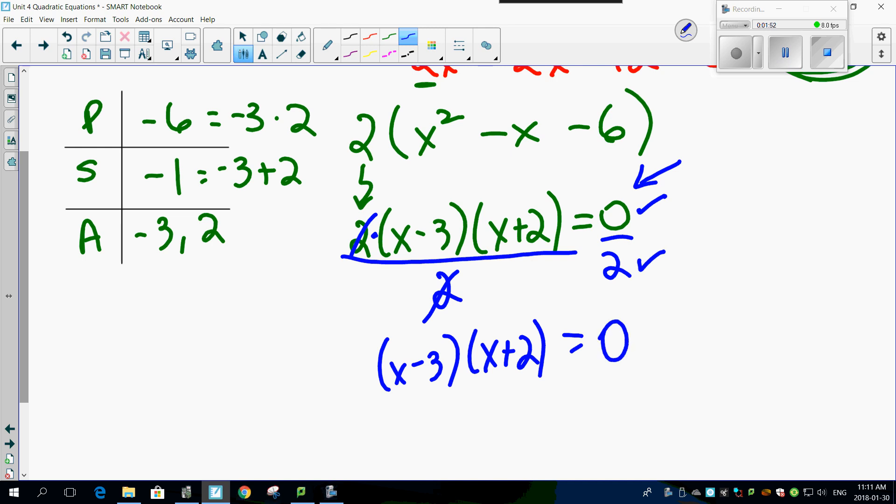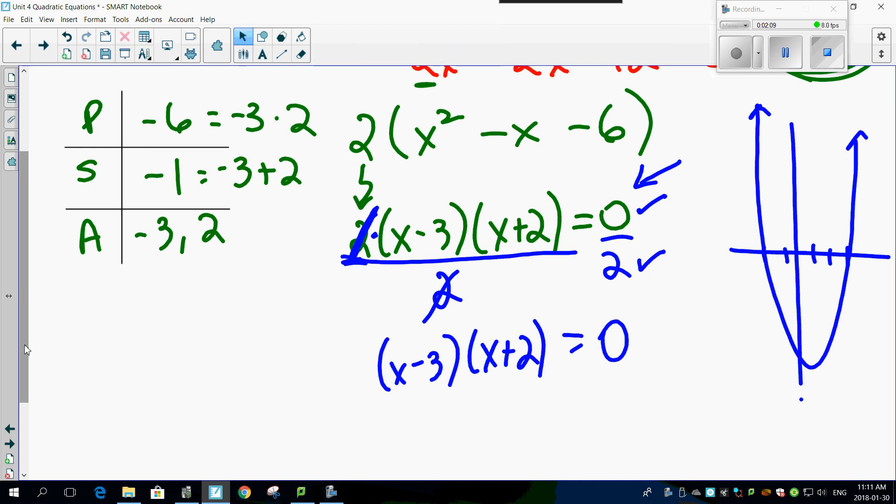So in other words, think about this. When I had the 2 up front here, and my answers are going to be minus 2, by the way, and positive 3, I had a very narrow graph. But by eliminating that 2 like this, I have a regular-looking graph that's going to come down. And guess what? Even though it's a regular-looking graph, guess what? It's still going to give me minus 2 and 3 is my answer.